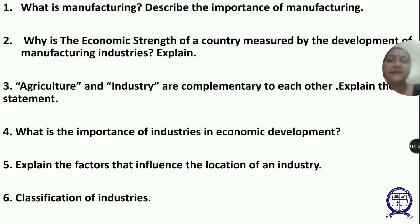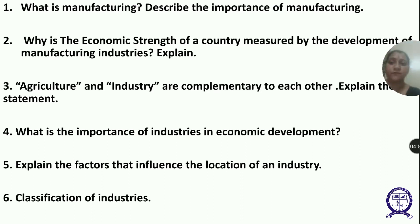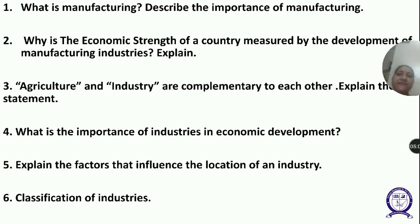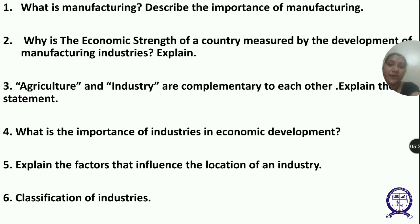Question 5: Explain the factors that influence the location of an industry. First is availability of raw material — the factory needs to be close to the source of raw material if it is heavy and bulky to transport. For example, iron, steel, and cement industries are located near the source of raw material, which cuts down transportation costs. Second is labor — a large and cheap labor force is required for labor-intensive industries.